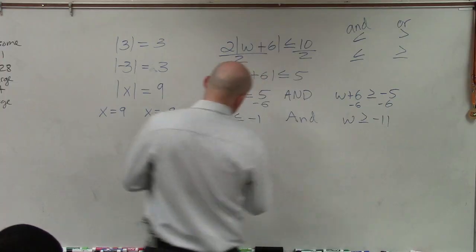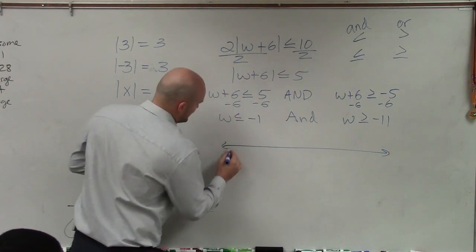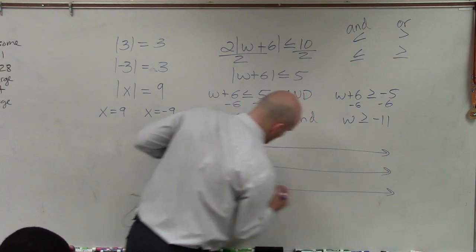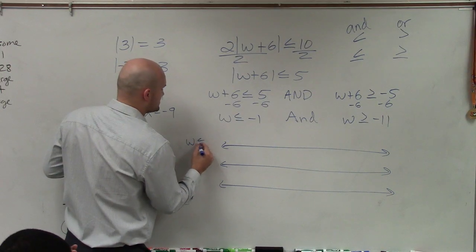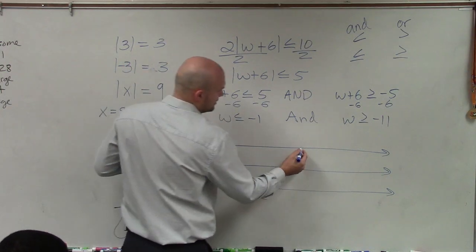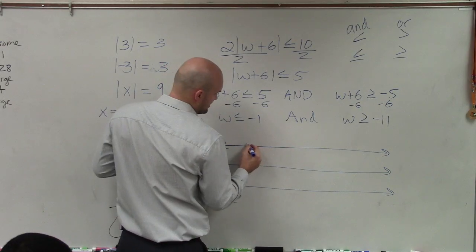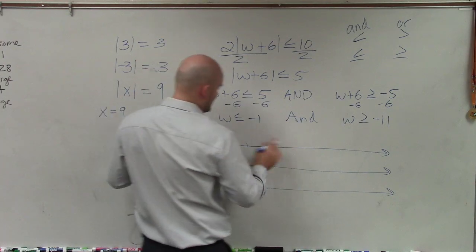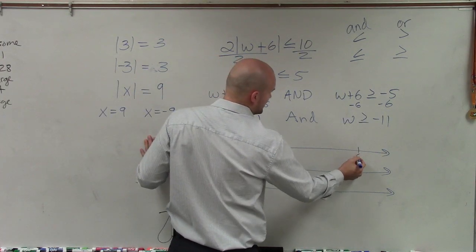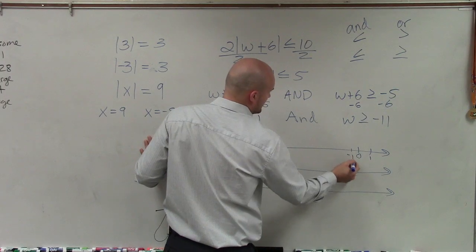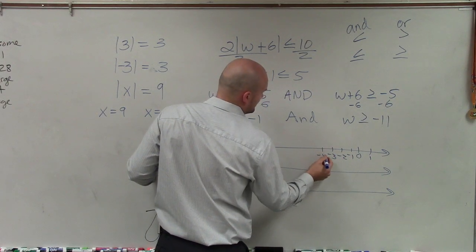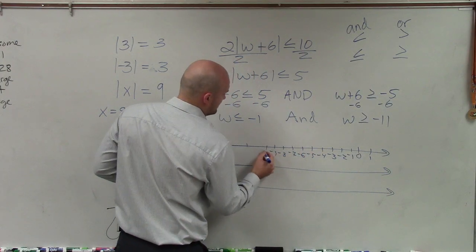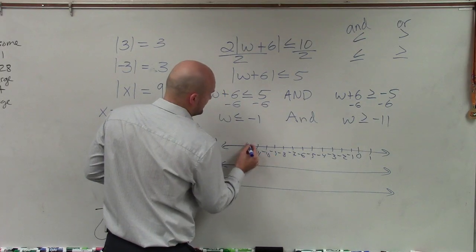So when we're graphing compound inequalities, again, ladies and gentlemen, the best way that I like to teach or show you how to graph the compound inequalities is we're looking for the intersection. So I'll graph one at a time, w is less than or equal to negative 1. So let's do 0 right here, then 1, so negative 1, negative 2, negative 3, through negative 12.